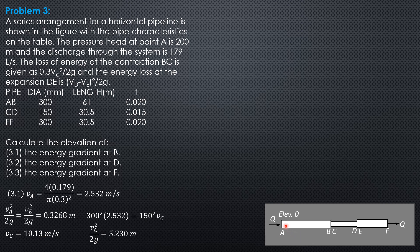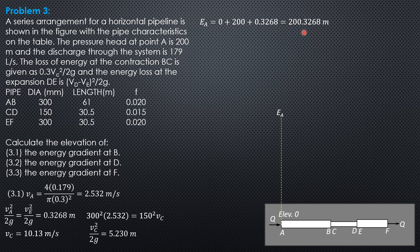Let's locate the energy gradient at A: pressure head is given as 200 meters, with elevation beginning at zero. So the total energy at A is elevation head plus pressure head plus velocity head = 0 + 200 + 0.3268 = 200.3268 meters. Between A and B, the energy grade line slopes downward due to head loss in pipe AB.